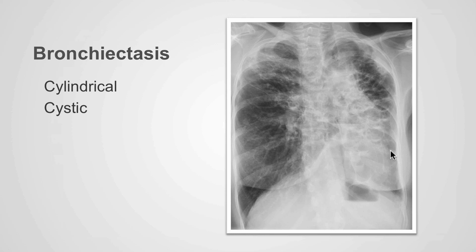In this case, we see multiple cystic areas within both lungs that contain small air-fluid levels. These are infected bronchiectatic cysts, predominantly within the left lung, but also present on the right.